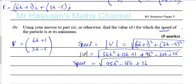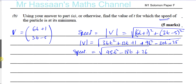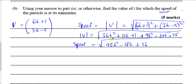We want to find the minimum speed. We could differentiate, but differentiating (45t squared minus 18t + 26) to the power of a half requires the chain rule, which is beyond the scope of P1 and P2 and is more complicated. Instead, the value of t for which the speed is minimum will be the same value of t for which the square of the speed is minimum.